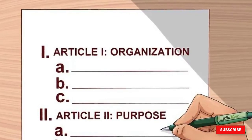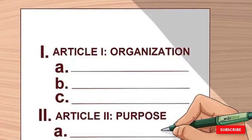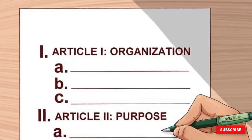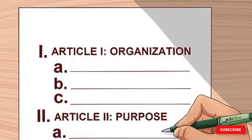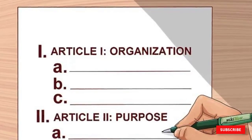These headings will be in all capital bold letters and numbered with Roman numerals, centered on the page. For example, the first article would be titled ARTICLE I: ORGANIZATION, and the second article would be titled ARTICLE II: PURPOSE.